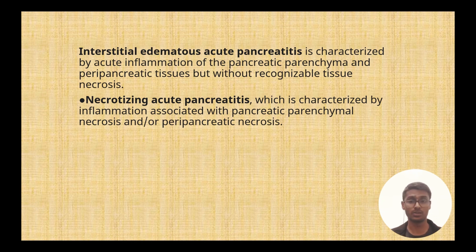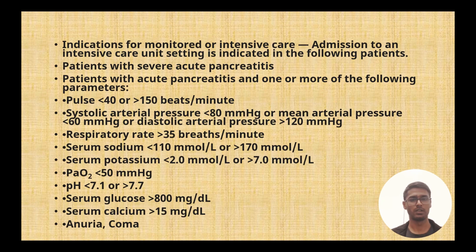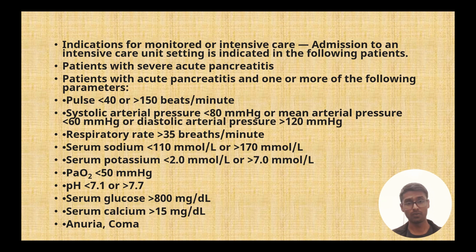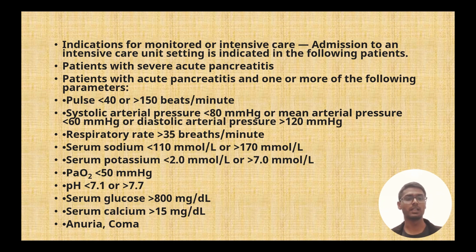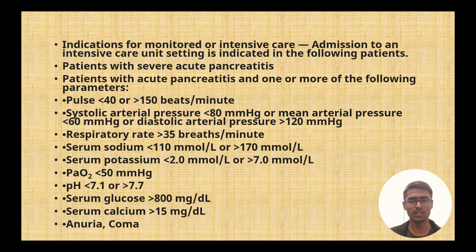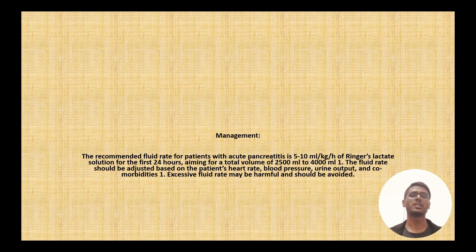Indications for ICU admission include patients needing CVP catheters, extreme pulse less than 40 or above 145, extreme blood pressure, sodium above 117, potassium at extremes, pH of 7.1, and serum glucose more than 800. Essentially, extreme values for any parameter are indications for ICU admission.